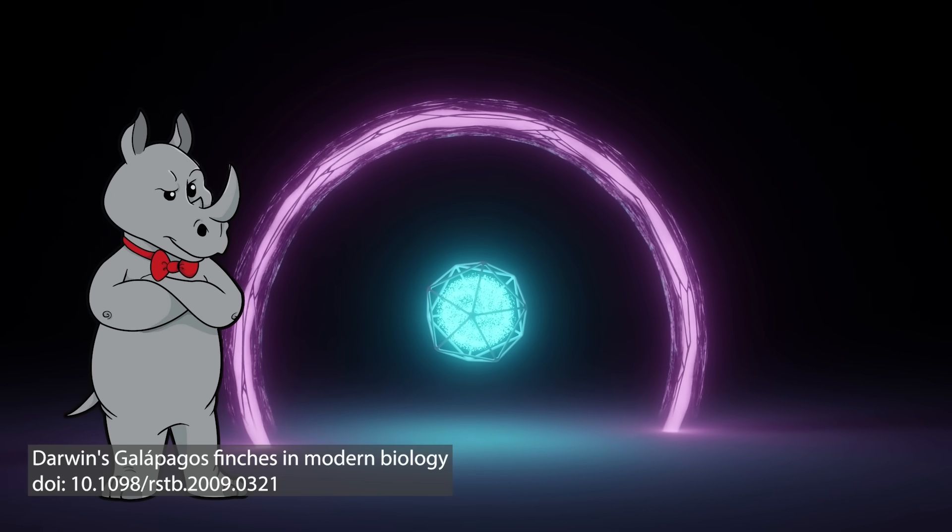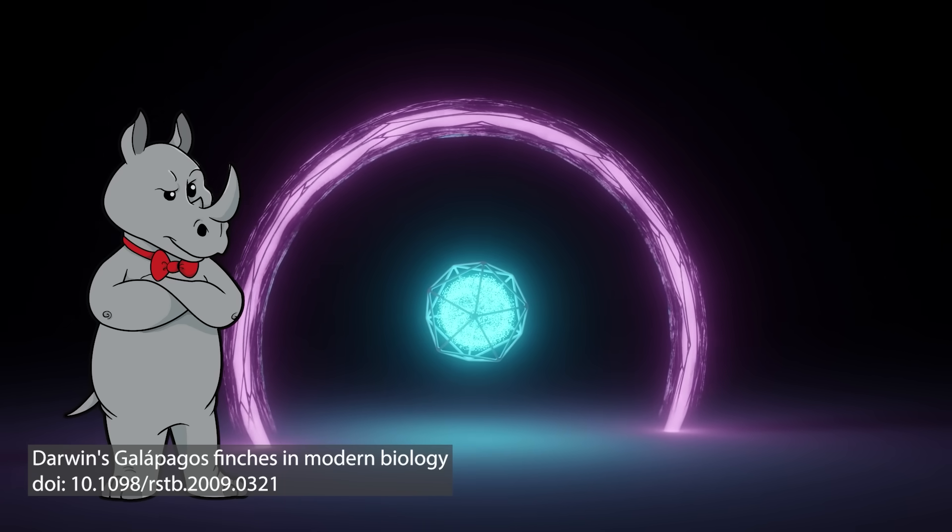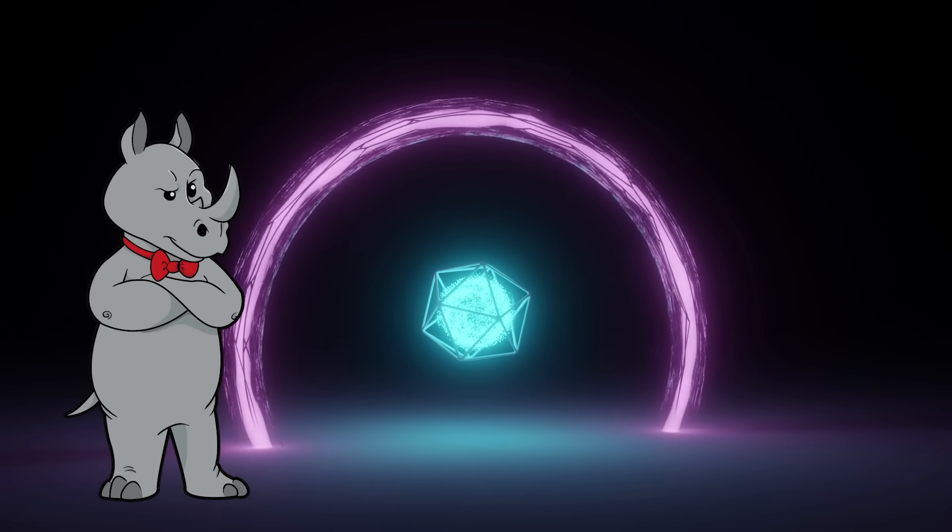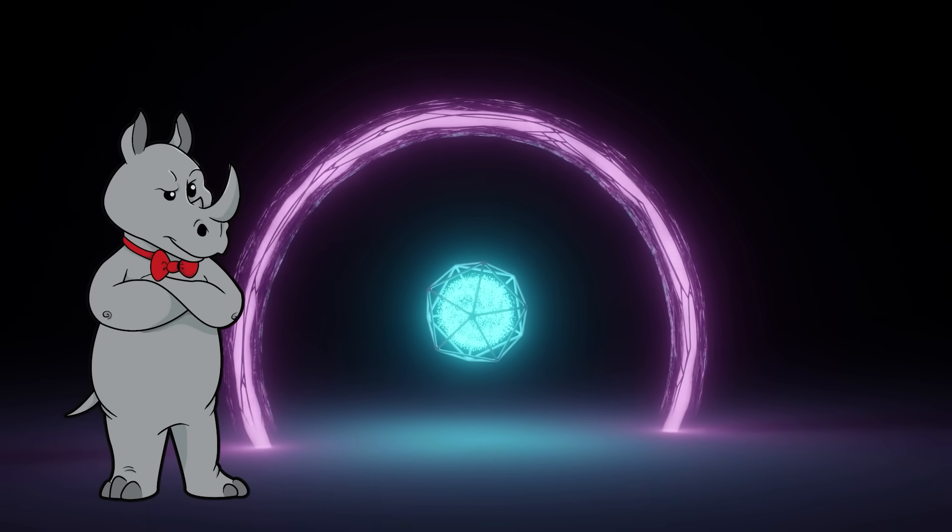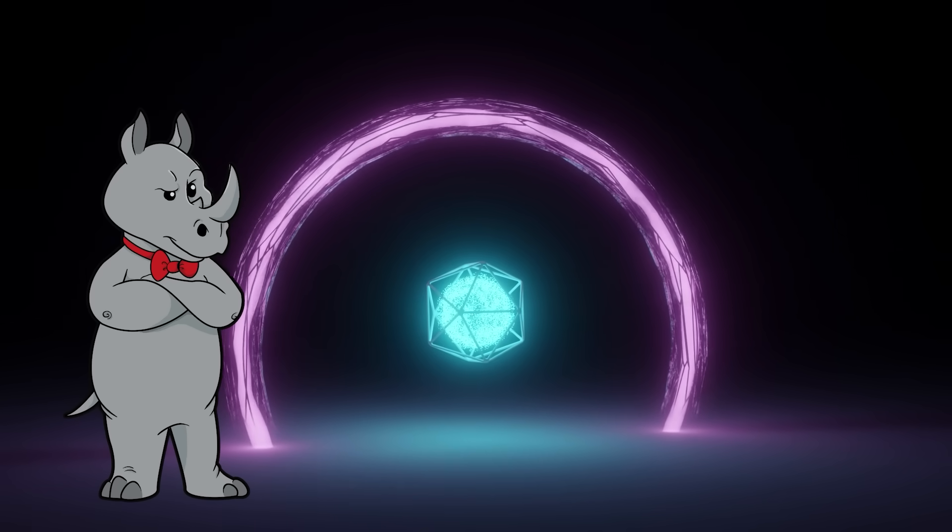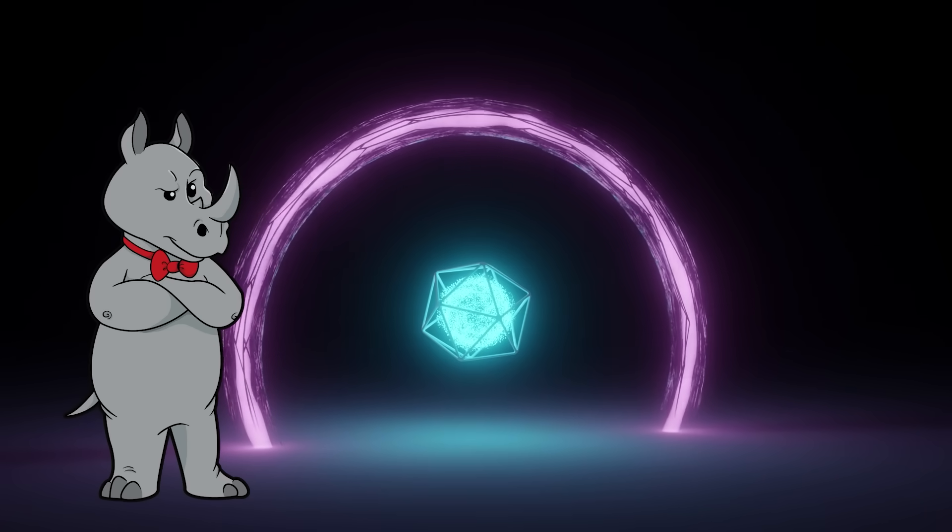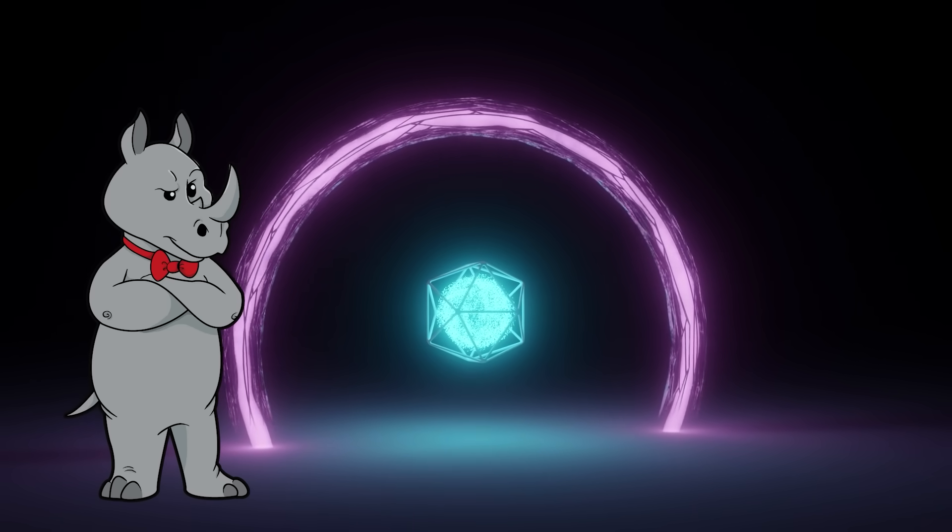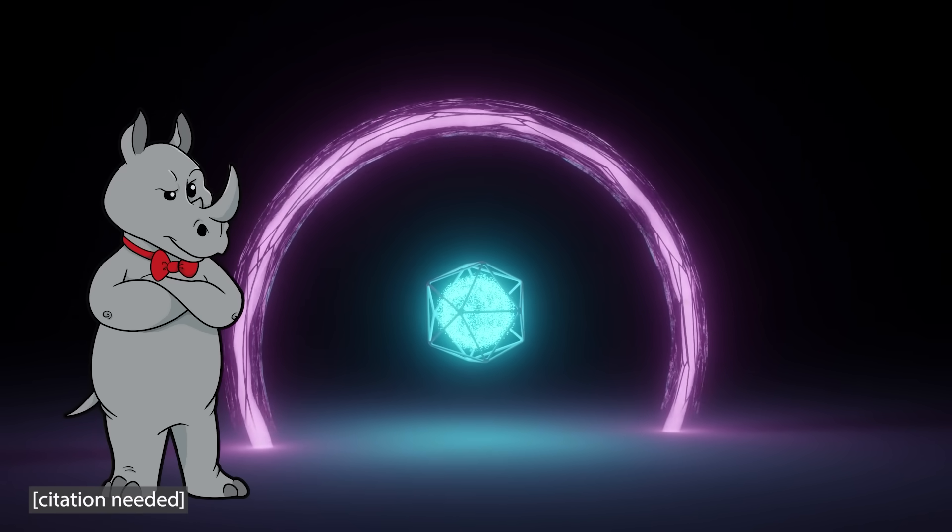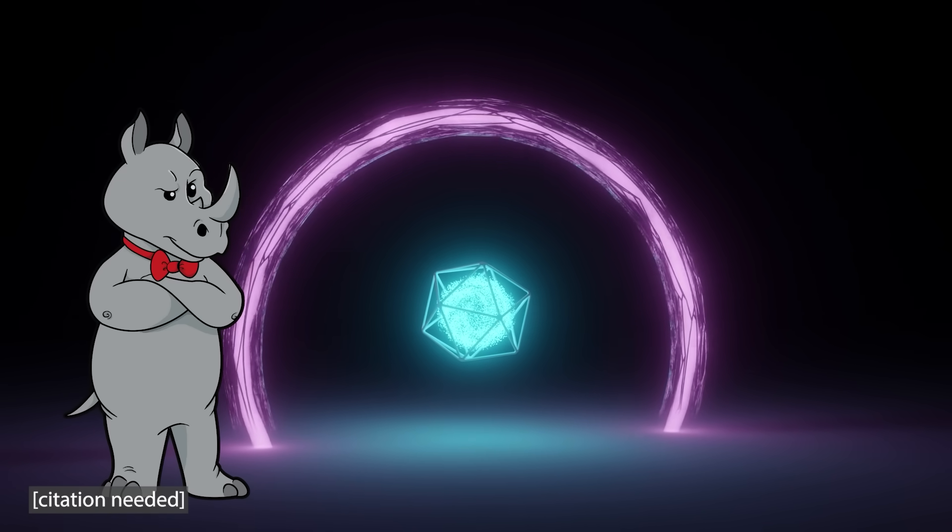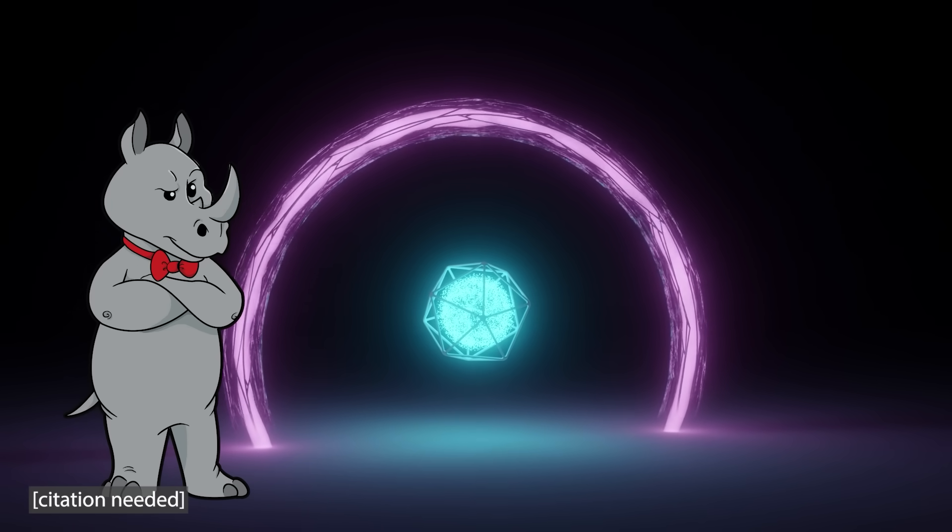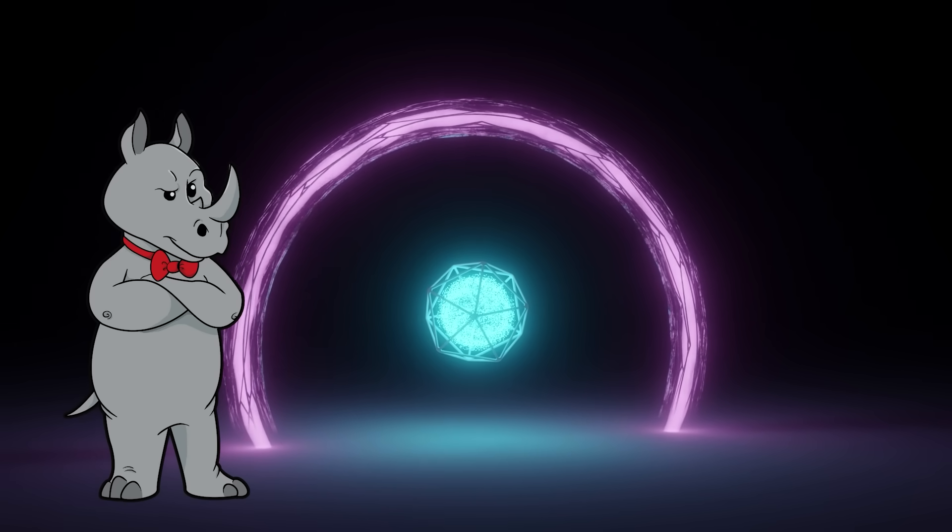The finches originally arrived on the Galapagos about three million years ago, and in the ensuing time have evolved into 15 distinct species. Todd seems to have taken issue with how long an island has existed for compared to how much evolution has happened, and I'm not sure if he just misspoke or if this was deliberate, but the more important metric is how long it has been since the organism we are looking at originally arrived on the island.